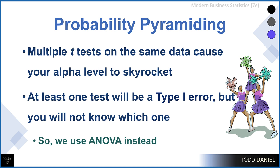Eventually, if we do enough t-tests on the same data, at least one will be wrong — it will be a type one error — but we will not know which one it is. So instead of analyzing the mean differences, we analyze the variance, which we call the analysis of variance, or ANOVA.